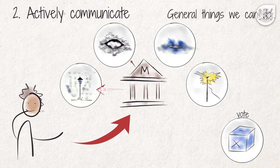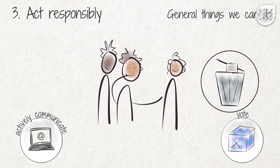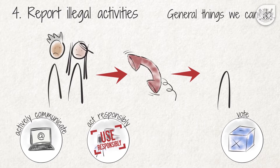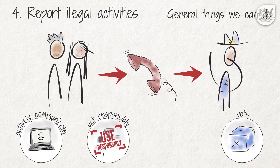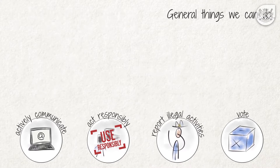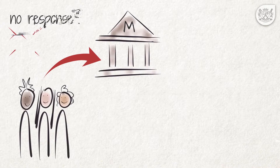Thirdly, responsive citizens should act responsibly towards everyone else in the community. For example, we must keep our streets clean by refraining from littering and dumping, and we must use scarce resources like water responsibly. Fourthly, we need to report all illegal activities to ensure that we, as law-abiding citizens, can contribute to a good quality of life for ourselves and our children. One way to do so is, for example, to actively participate in community police forums. If we have tried to communicate and contact our municipality and have not received a response, as citizens we may also express our concerns through petitions, the media and peaceful demonstrations.